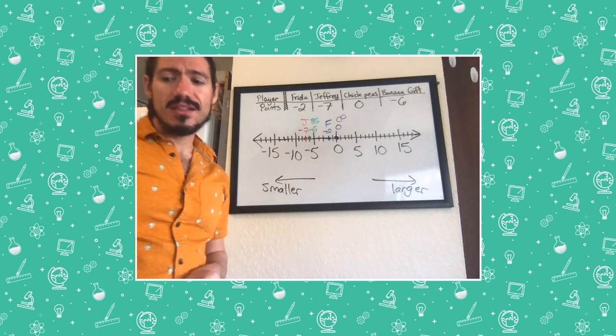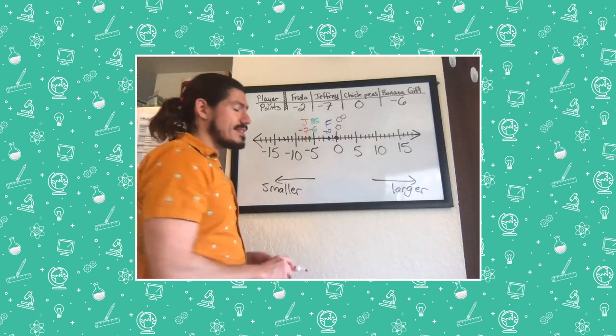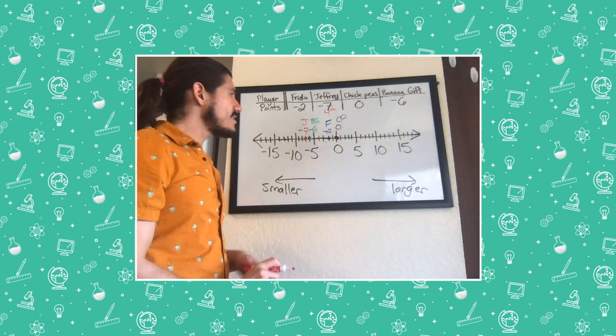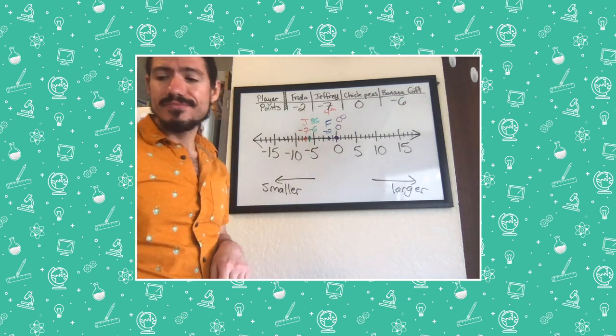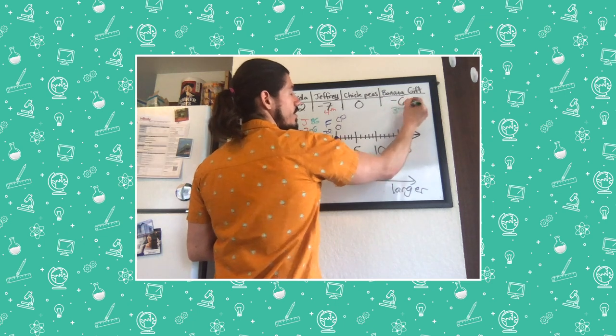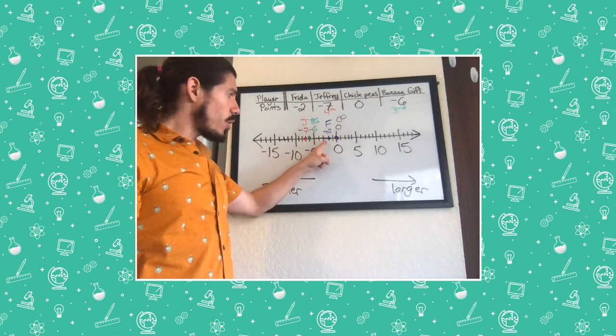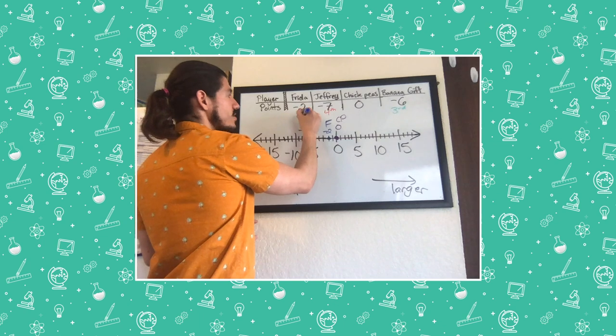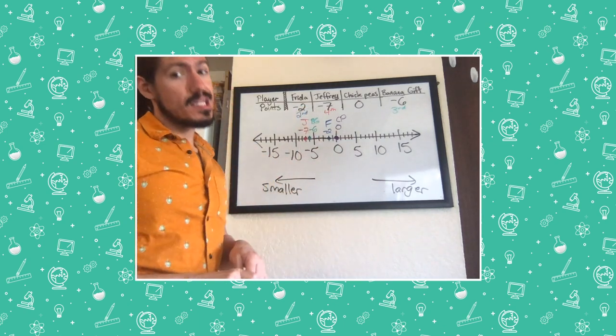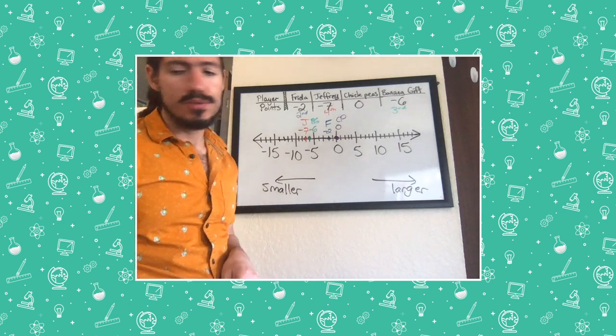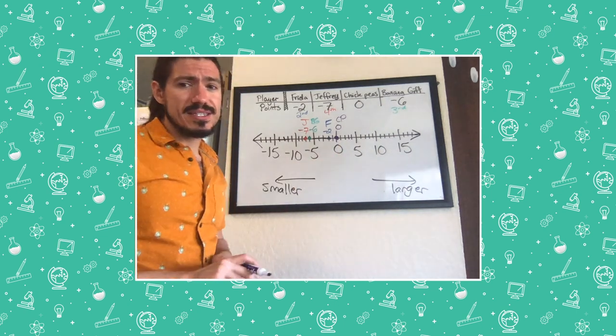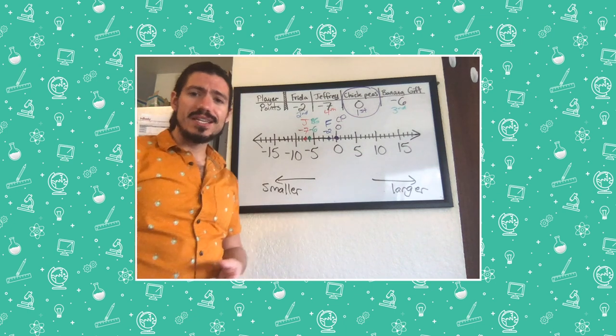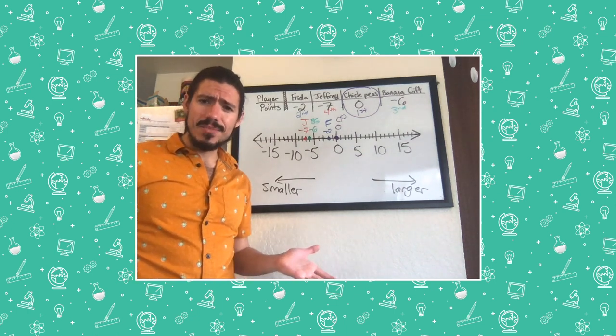Looking at the number line, I see that Jeffrey is furthest to the left. Poor Jeffrey. It's just not his day, is it? So that means Jeffrey came in fourth place. I then see that banana gift is at negative six points. So banana gift must have come in third place. Going to the right, I next come to Frida. Frida got negative two points. Well, she may have won patchwork, but she didn't quite win Dominion. Although second place is still very respectable. And then finally, we see Chickpeas with zero points is furthest to the right. So that means Chickpeas is our champion of dominion. Isn't that crazy that you could win a game with zero points?